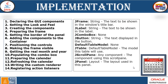Now, let's take a look at the implementation. There are a few steps we are going to work on for this application for creating a calendar. Declaring the graphic user interface components like JFrame — for storing the text to be shown in the window's title bar — and JLabel.